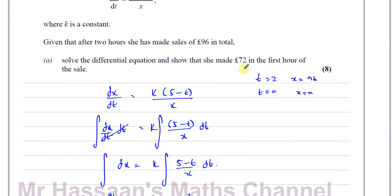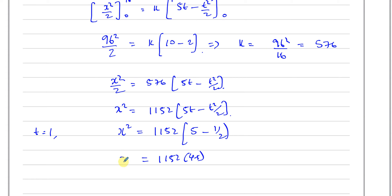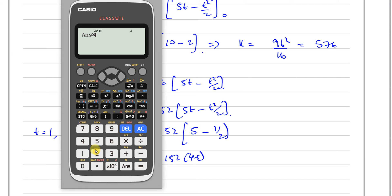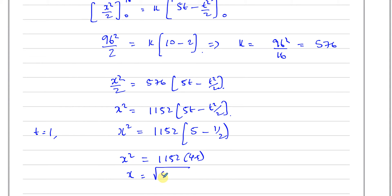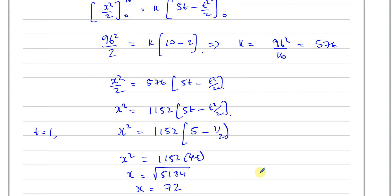They told us to show that she made 72 pounds in the first hour. So when t = 1, x² = 1152 × (5×1 − 1²/2) = 1152 × 4.5 = 5184. Therefore x = √5184 = 72. Exactly what we had to show: x = 72 pounds when t = 1 hour.